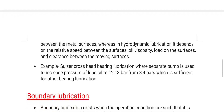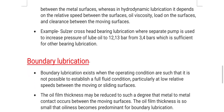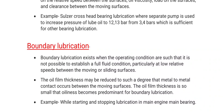An example of hydrostatic lubrication is the slow-speed crosshead bearing lubrication, where a separate pump is used to increase the pressure of lube oil to 12 to 13 bar from the normal 2 to 4 bar, which is sufficient for other bearing lubrication. The third type of lubrication is boundary lubrication.